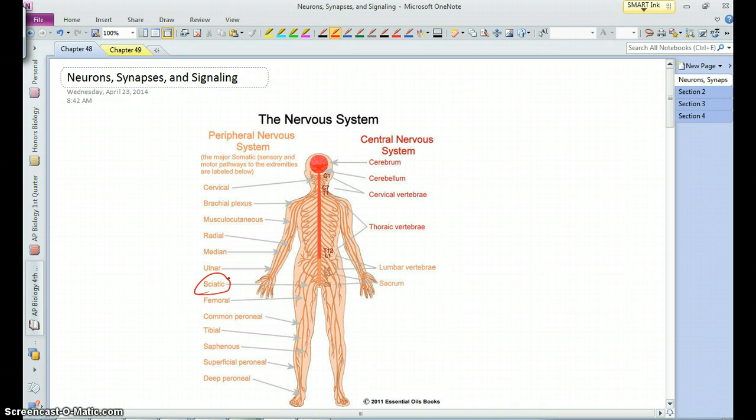The sciatic is one that is often associated with lower back pain and pain down the leg because it's a nerve that, as your vertebra can become compressed, it can pinch that nerve and cause some problems.